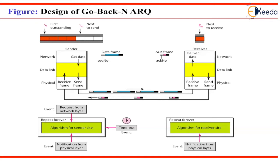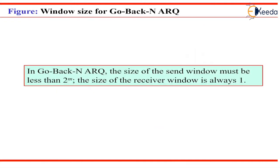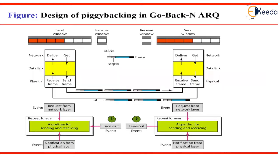This figure shows the actual design: multiple frames can be in transit in the forward direction and multiple acknowledgements in the reverse direction, similar to stop-and-wait ARQ but with multiple frames in transition. The send window size in Go Back N ARQ must be less than 2 raised to m. For example, if m equals 2, the window size is 2 raised to m minus 1, which is 3. The size of the receiver window is always 1.